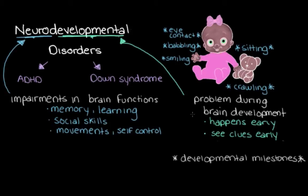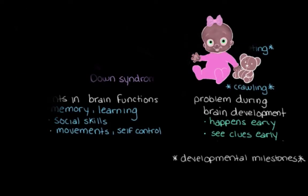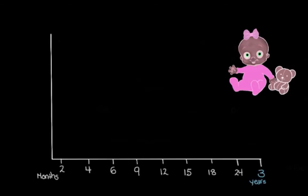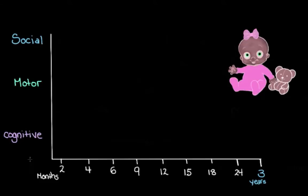Let's use a little graph to talk more about this. We'll put age at the bottom on our x-axis, and we'll use our y-axis to categorize those brain functions we talked about. So let's call one category "social," then we'll make another one called "motor," and let's put "cognitive" down here.